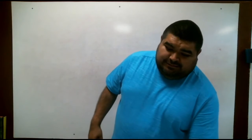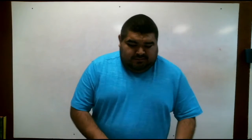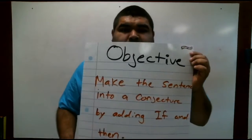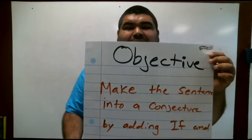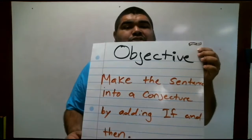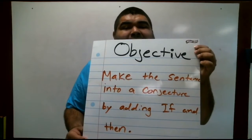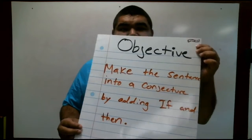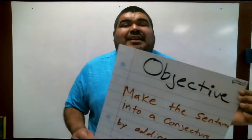Hello ladies and gentlemen, welcome back to math. Today we're going to learn about conjectures. The objective for today is to make a sentence into a conjecture by adding 'if' and 'then.' Those are your key words: 'if' and 'then.'